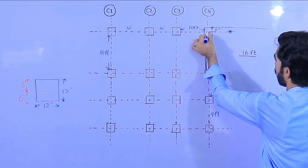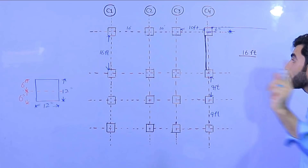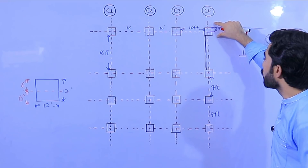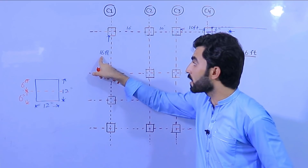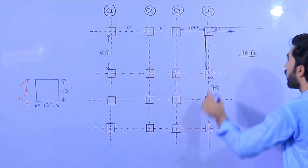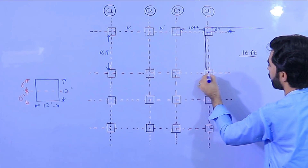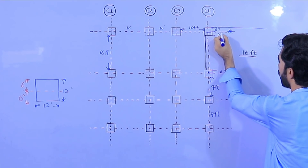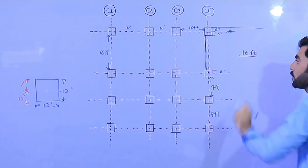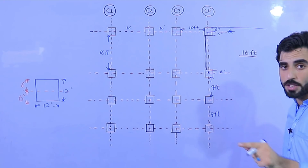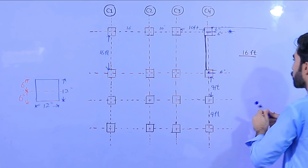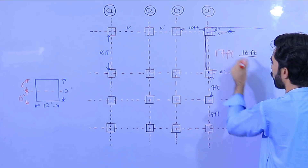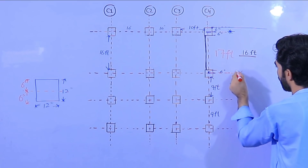After the center — from the boundary wall where you have the first column — you will keep 17 feet and 6 inches, because from this center to this center, the half column is 6 inches on each side. The actual length is 16 feet, so 6 plus 6 equals 12 inches. We should do the marking at 17 feet, and here we will do the marking at this point.